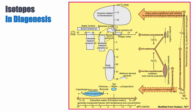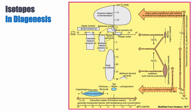Marine carbonates plot close to zero. Meteoric cement, because it comes from rainwater evaporated from seawater, plots towards more negative delta O18, with delta C13 that is quite variable. Delta O18 is a function of both temperature and fluid composition. In meteoric cement we see light delta O18, but we also see that burial cement — in this case from the Upper Jurassic — is also negative.